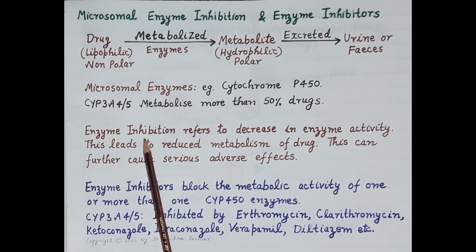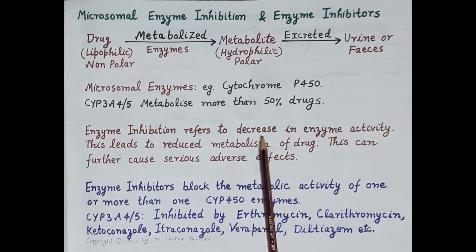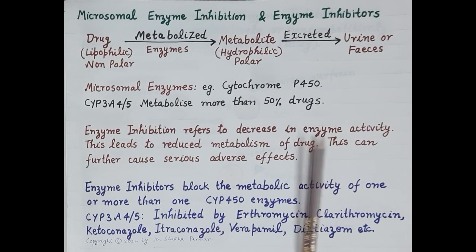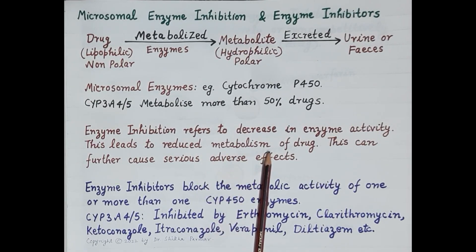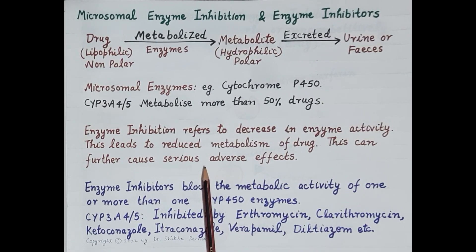Enzyme inhibition refers to a decrease in enzyme activity. Reduced enzyme activity leads to reduced metabolism of a drug by the enzyme, and as drug metabolism is reduced, the drug accumulates in the body, which can further cause serious adverse effects.